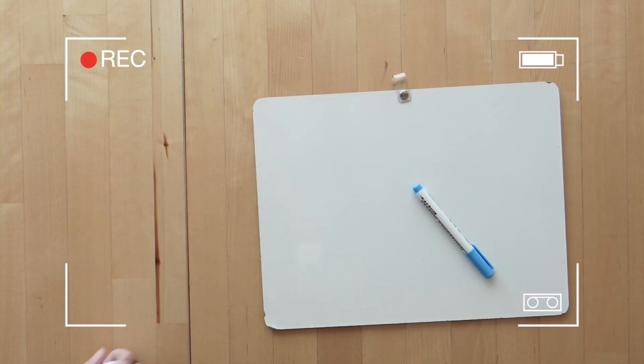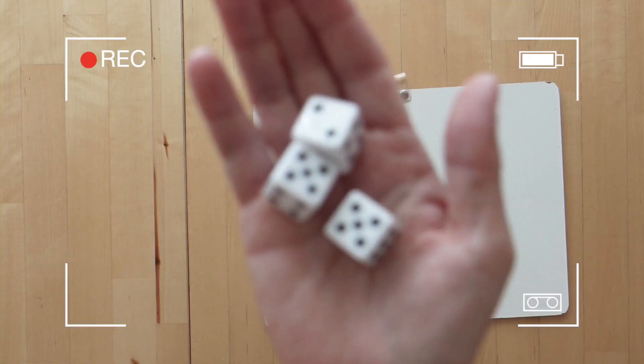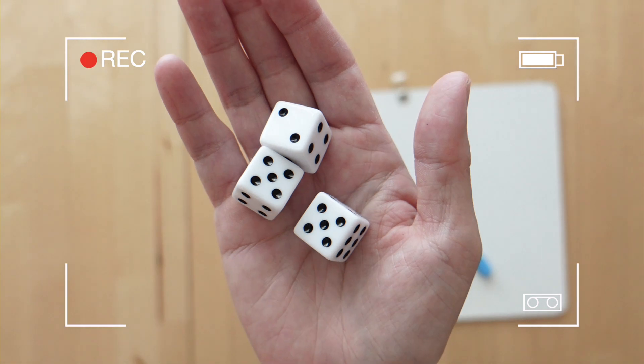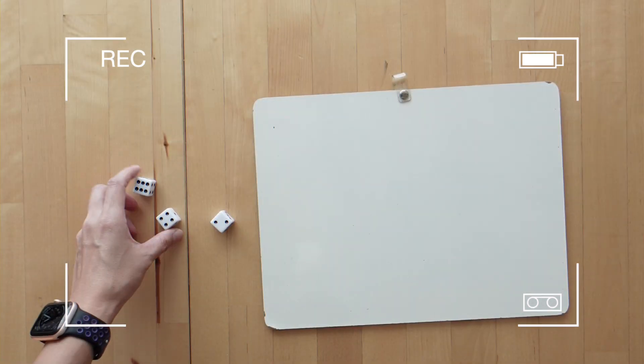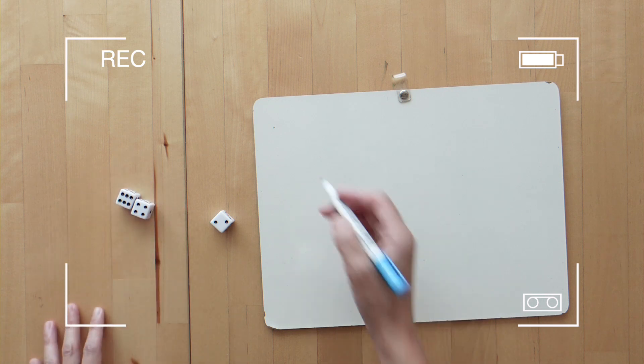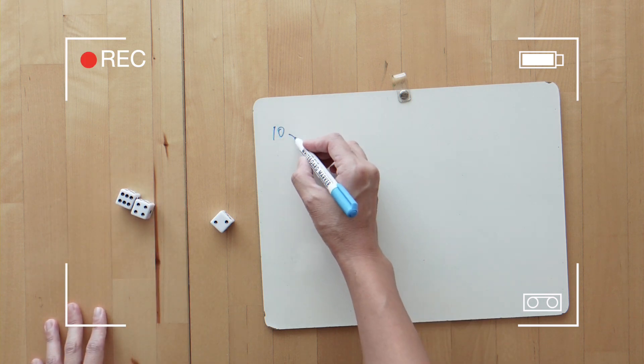Now, players take turns coming up with the largest product using their three dice. To start off, players roll their three dice. So we could add 6 and 4 to get 10 and multiply that by 2.